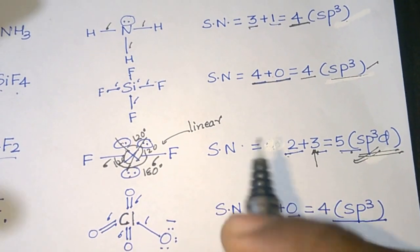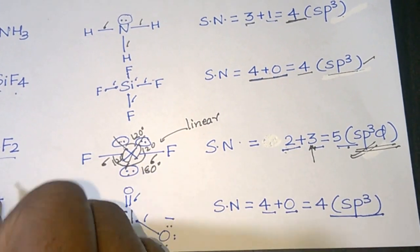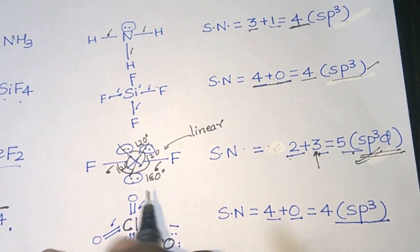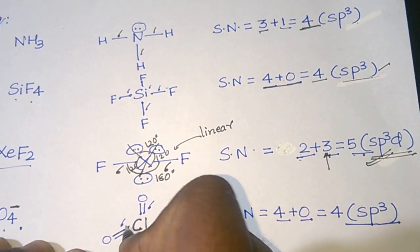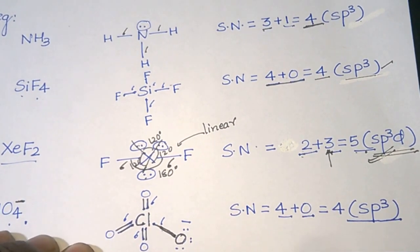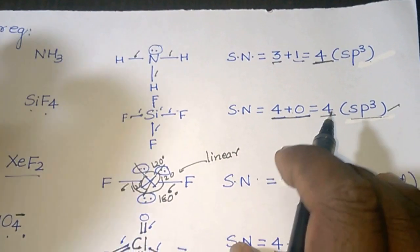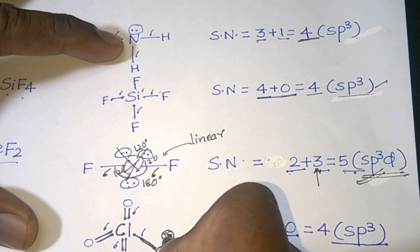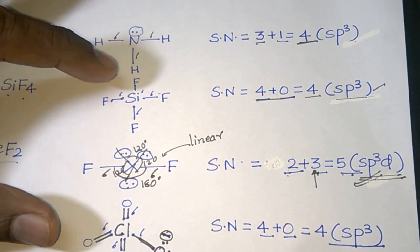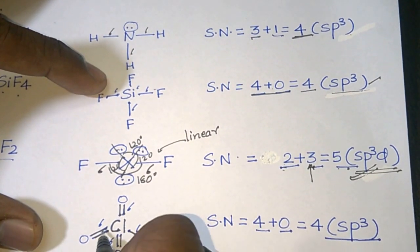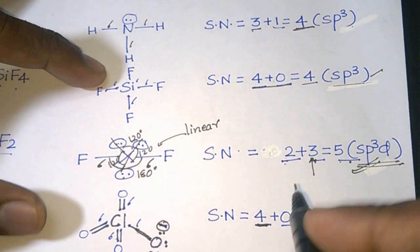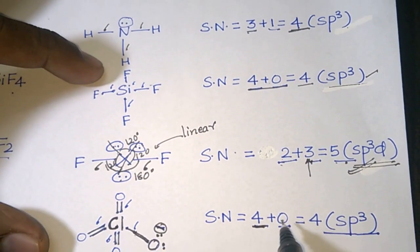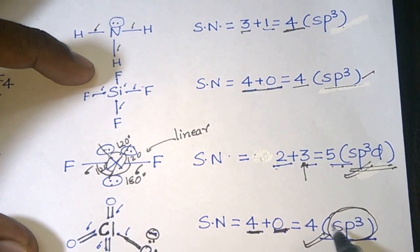Next is ClO4 minus. Chlorine has 7 outermost electrons and there is one negative charge. We connect one oxygen with a single bond and three oxygens with double bonds. All electrons of chlorine are used in bonding, so there is zero lone pair on chlorine. The negative charge is placed on the singly bonded oxygen. The steric number is 4 sigma bonds plus 0 lone pairs, equal to 4, so chlorine is sp3 hybridized.